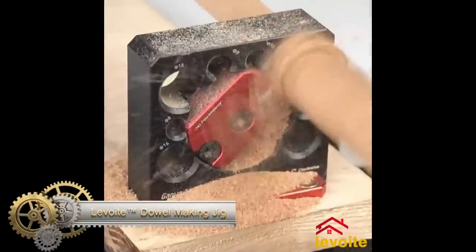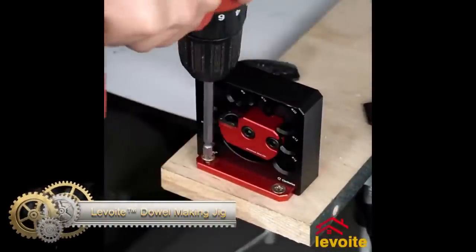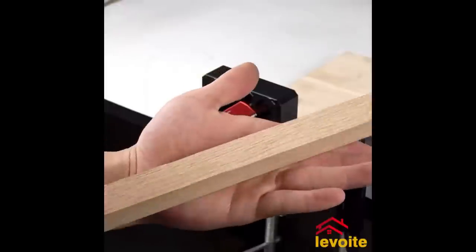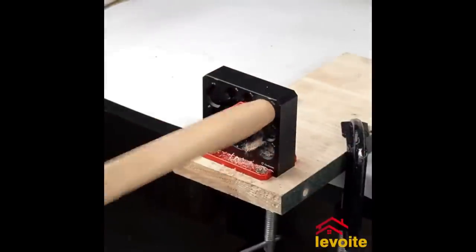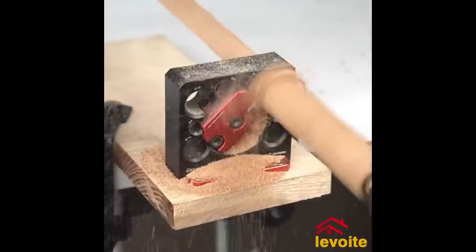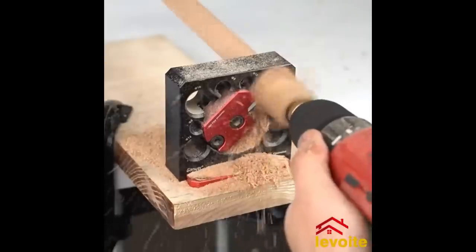The Levoit Dowel Making Jig Dowel Maker Router Jig is a versatile and reliable tool for creating dowels using a router. Made of durable aluminum alloy with eight different hole sizes, it ensures accurate and clean cuts with the included carbide insert. The jig offers precision, versatility, and affordability, making it a valuable addition to any woodworking toolkit.